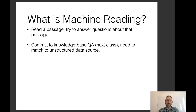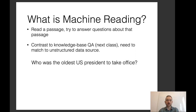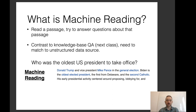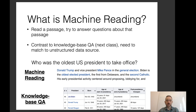To give an example, if we have a question — who was the oldest U.S. president to take office — in machine reading we'd be given a text that says something like 'Biden is the oldest elected president, the first from Delaware, and the second Catholic,' which would hint that the answer is Joe Biden. In knowledge-based QA we might have a structured table with the president's name and age at the start of the presidency, and if we sort by age we manage to get the same correct answer.